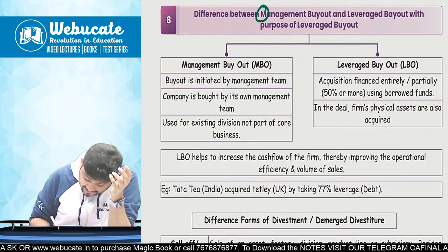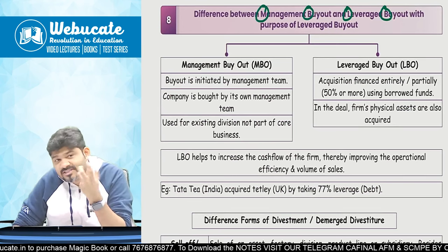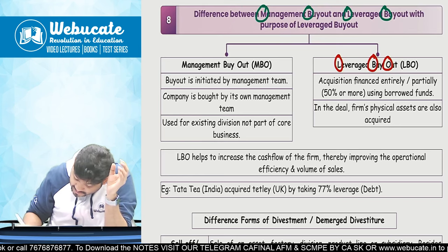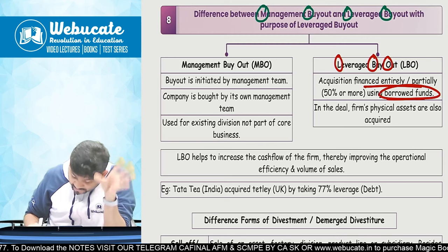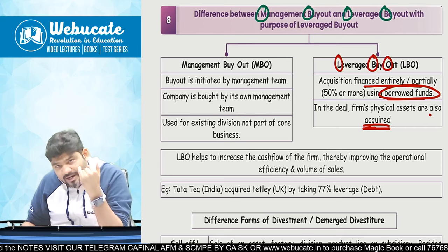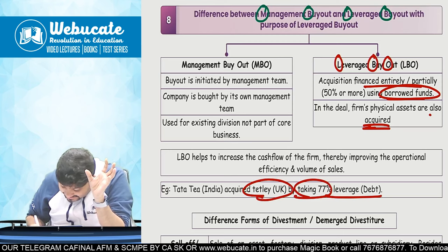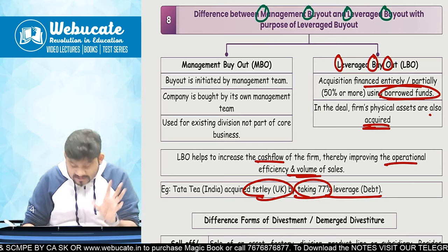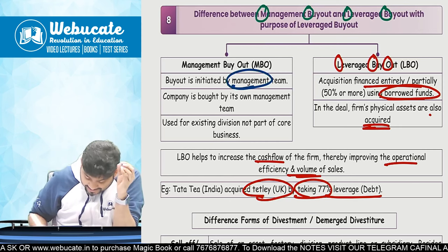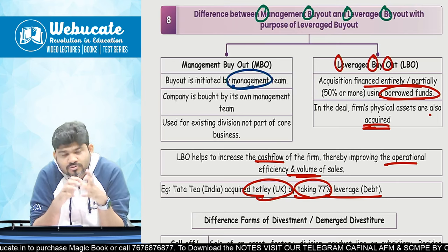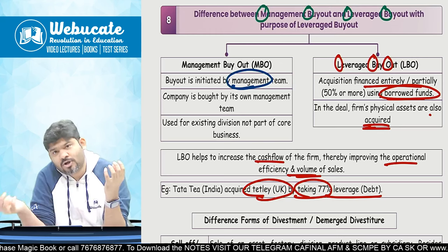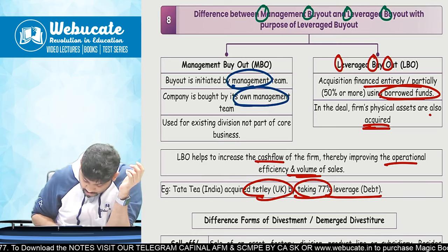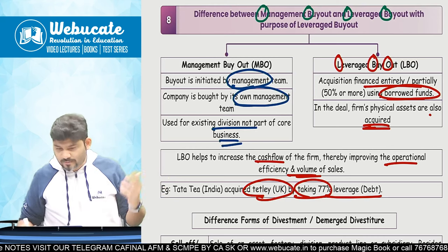Then the difference between Management Buyout and Leveraged Buyout. Leverage buyout means you take a lot of debt and acquire a company — called LBO. Acquisition financed entirely by borrowed funds; the firm's physical assets are also acquired using borrowed money. Tata Tea acquired Tetley UK by taking 77% debt — that is an LBO. LBO helps increase the cash flow of the firm, improving operational efficiency. Management Buyout (MBO) is initiated by the management team — say Tata Motors buying out Tata Steel. The company is bought by its own management team, used for existing divisions not part of the core business.